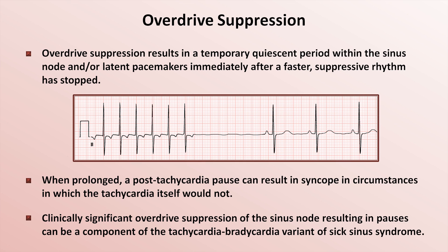In addition, overdrive suppression has minimal effect on abnormal automaticity as compared to latent pacemakers. Therefore, what appears to be a normal escape beat occurring during a relatively short sinus pause may actually be an example of abnormal automaticity, as the latent pacemakers would likely still be experiencing suppression.